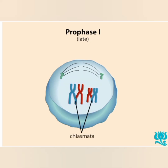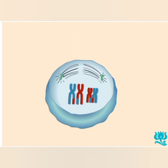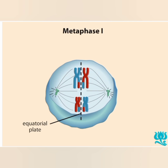Recombinant chromatids consist of both maternally and paternally derived DNA. At metaphase 1, homologous chromosomes have lined up on the equatorial plate in a pairwise fashion, with one homologue on either side of the plate.